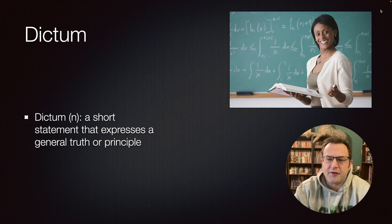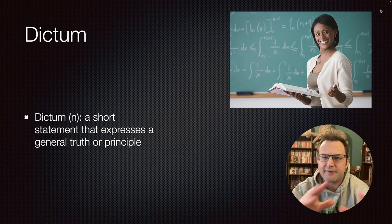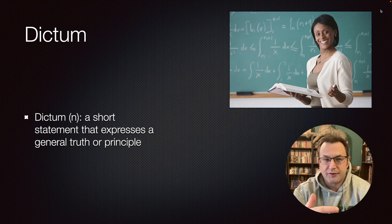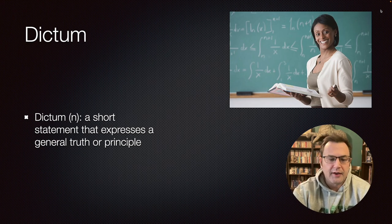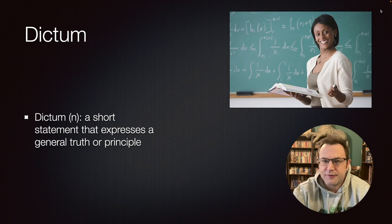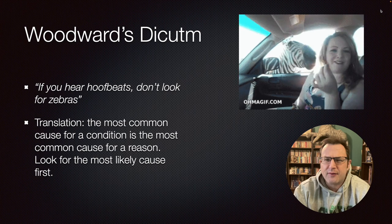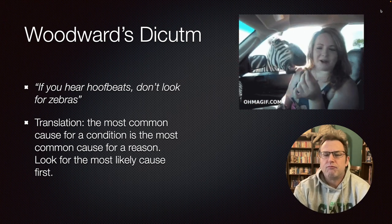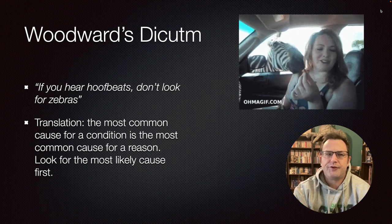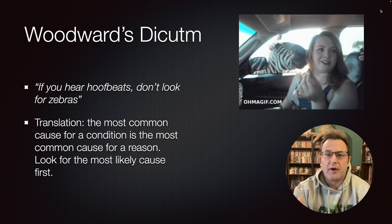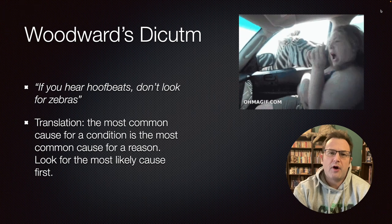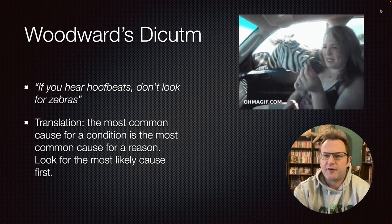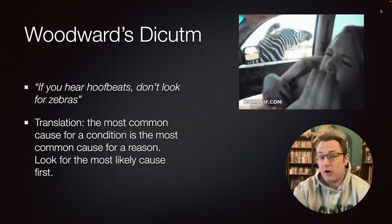So how do you parse all that information you have on a person? How do you sift through everything and make sense of what's going on? The first dictum I found is Woodward's dictum: if you hear hoof beats, don't look for zebras. That means the most common cause of a symptom or sign is the most common cause for a reason. If you don't have a logical reason or some evidence that presents counter to that narrative, assume the most common cause as default.